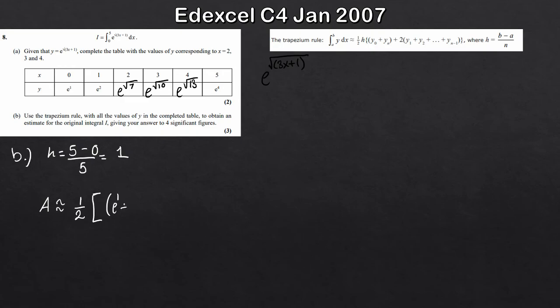So this is e to the 1, so it's first plus the last term. So the last term is e to the 4. And then we add 2 lots of everything else. So that's e squared plus e root 7 plus e root 10 plus e root 13 there. Okay. And then at this stage here, like always, calculator, work out the approximation. So if you plug all this into your calculator correctly, what you should get for A, that this is approximately 110.6, to 4 significant figures there. Okay. So, 4 significant figures.